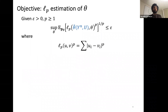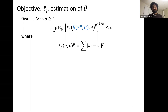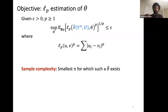To measure how good the estimation is, we consider L_p estimation. We fix an accuracy parameter epsilon and a value of p at least one, and our goal is to output an estimate theta-hat such that no matter what the underlying true theta is, the expected L_p loss is at most epsilon, where the L_p distance between two vectors u and v is given by the standard expression. The sample complexity for this task is the smallest value of n for which such a theta-hat exists.